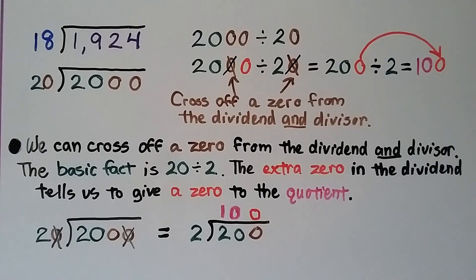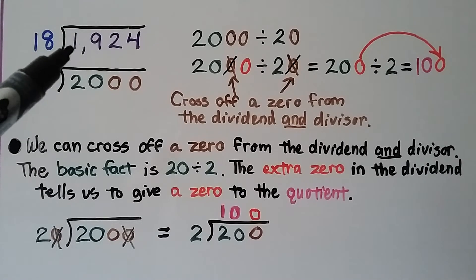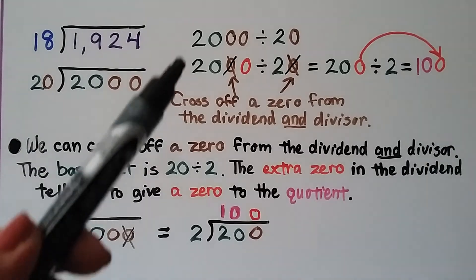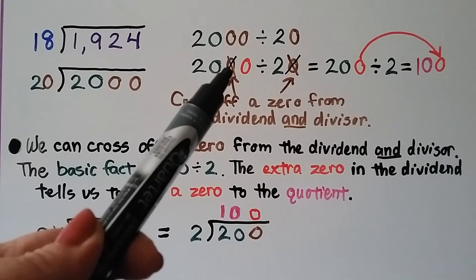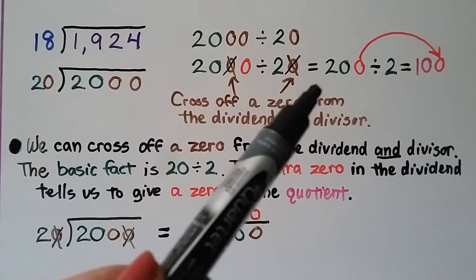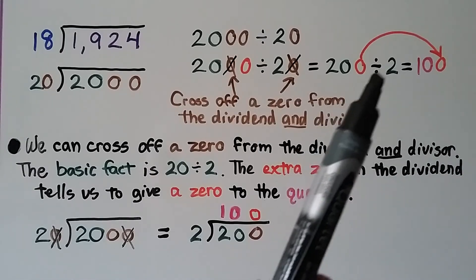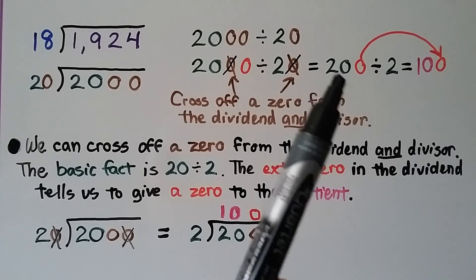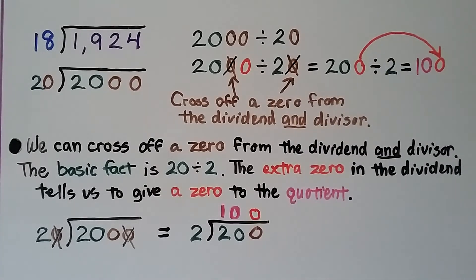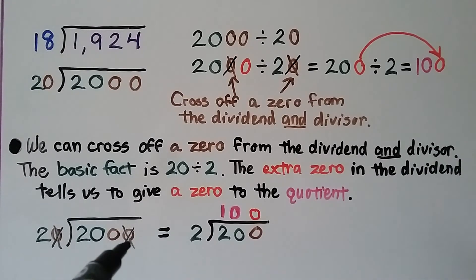For 1,924 divided by 18, we round 18 to 20 and 1,924 to 2,000, giving 2,000 divided by 20. Crossing off a zero from both gives 200 divided by 2, which is 100. We can think of it as the basic fact 20 divided by 2 equals 10 with an extra zero — that's 100.